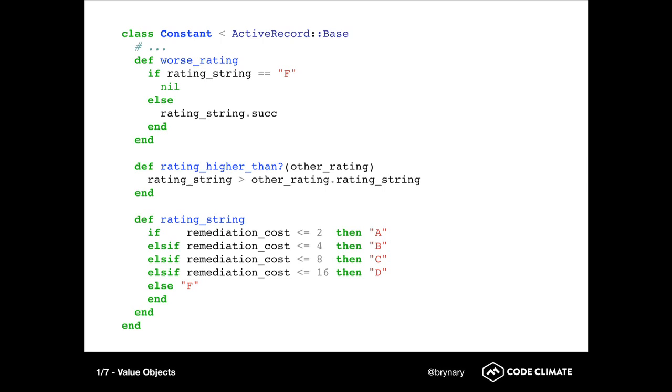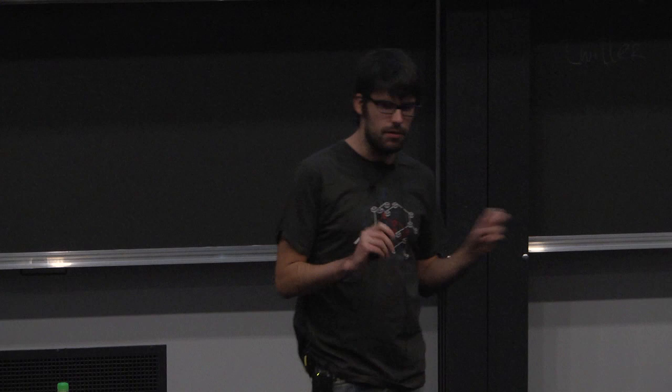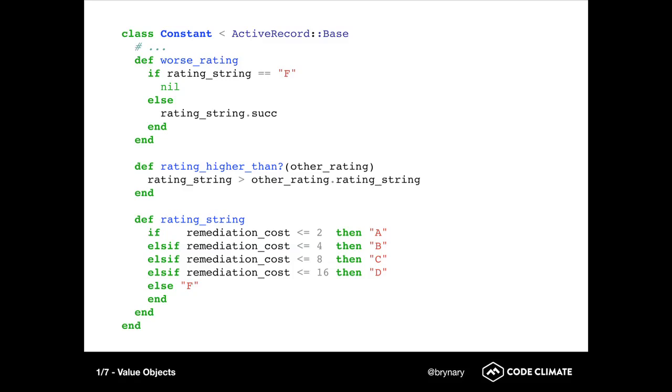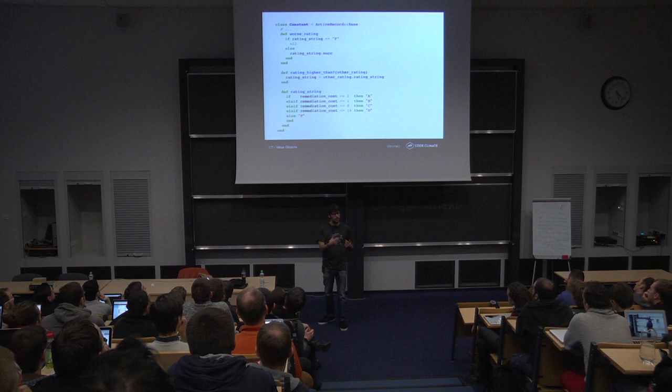So let's look at some ActiveRecord code and what problems it might have and how we might solve them with value objects. This is a class called constant, which is a part of Code Climate. It's how Code Climate grades each of your classes, it gives them a rating. The rating under the hood is based on what we call a remediation cost. And what you can see in this code is that we have a number of methods that repeat the word rating in the method name. And that's probably one of my favorite ways to identify missing objects. If you have repeated prefixes, suffixes, words in method names in an object, it's probably telling you that there's another object to extract out of that.